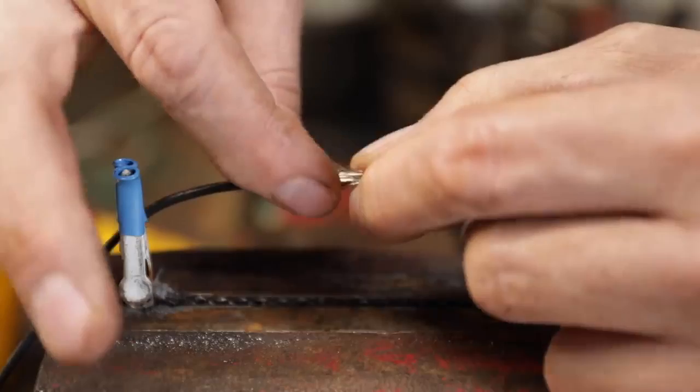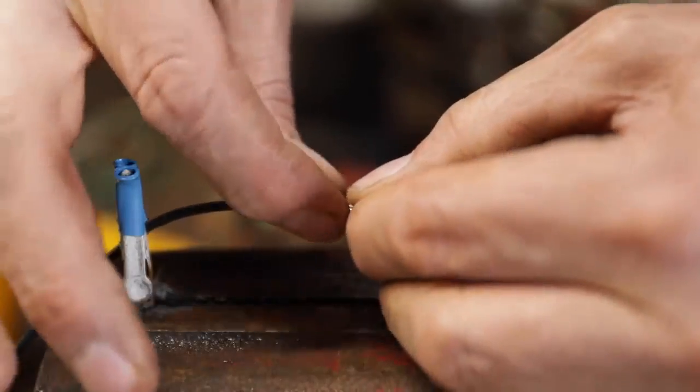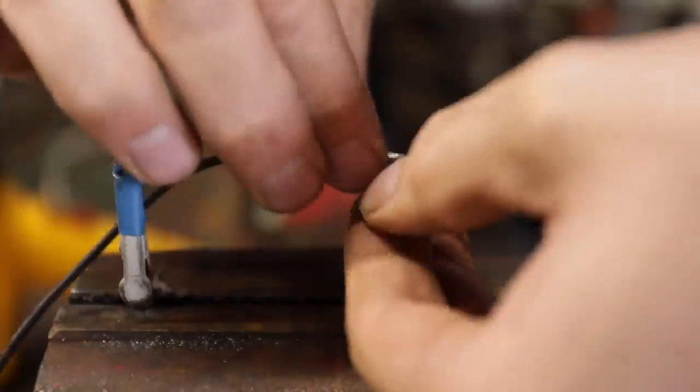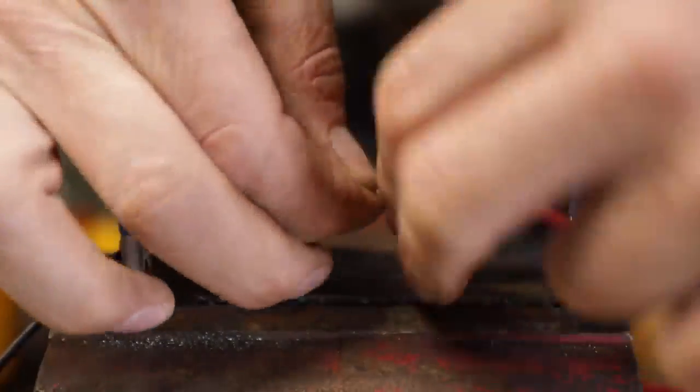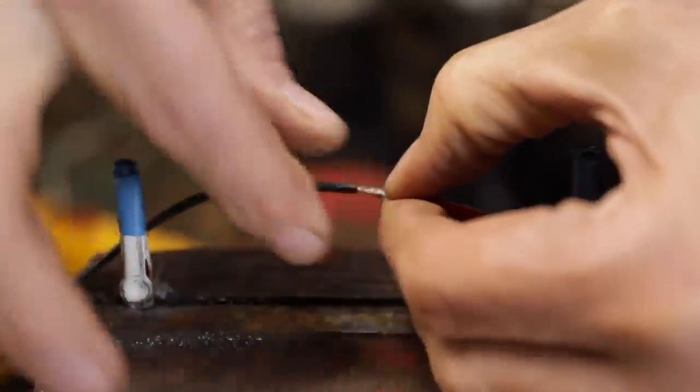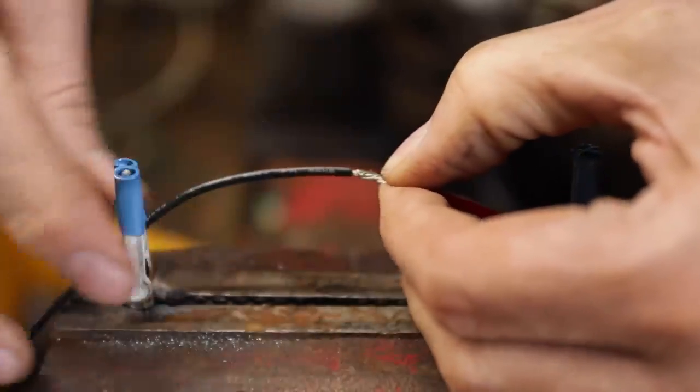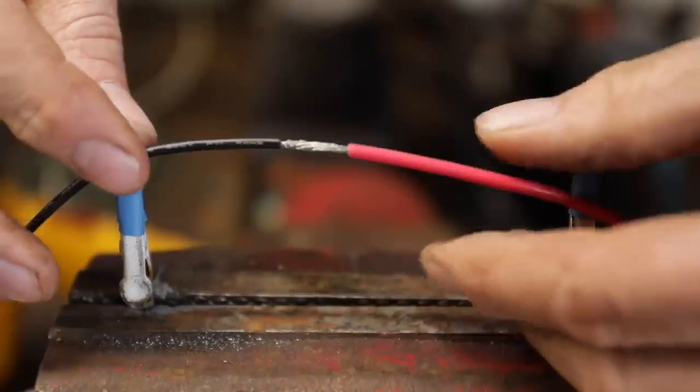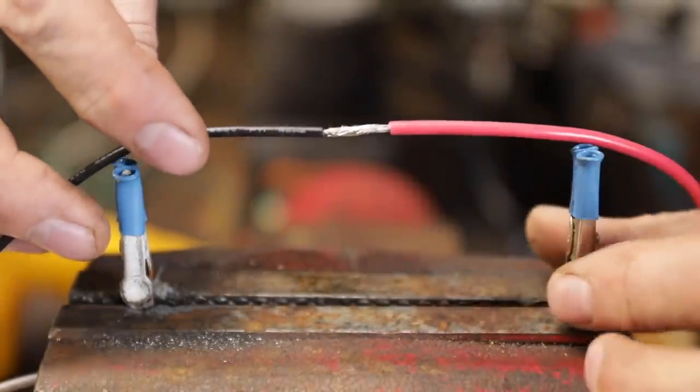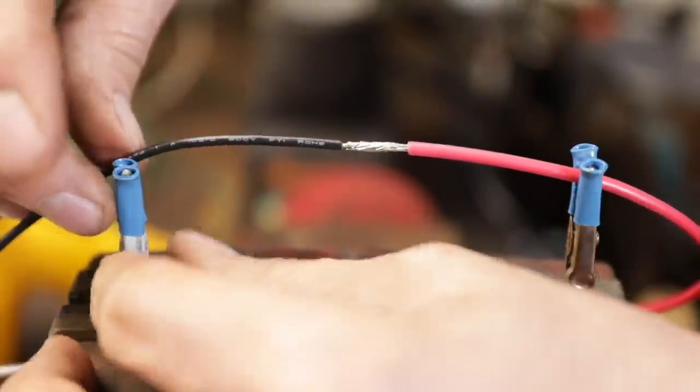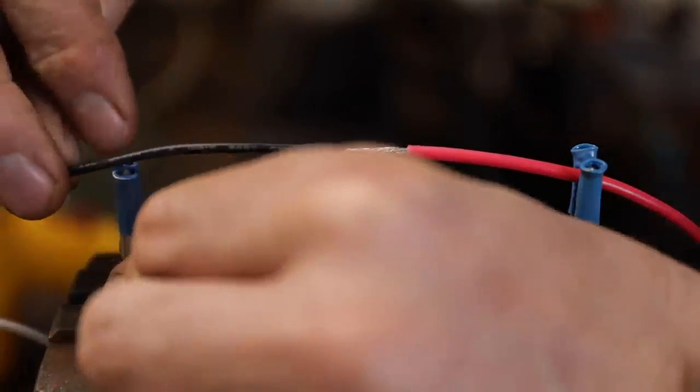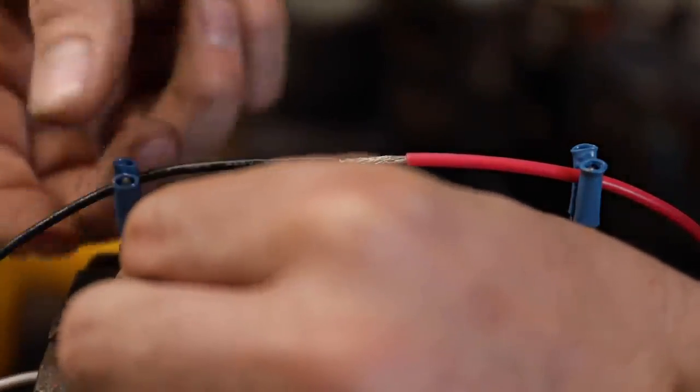Pinch one side like this here and start bringing everything together, and then twist. Twist this side here and then twist this side over here like that. That's going to give you the cleanest, the smallest connection. We're going to put our shrink tubing on there; it's going to be a little more low profile and look a little better.